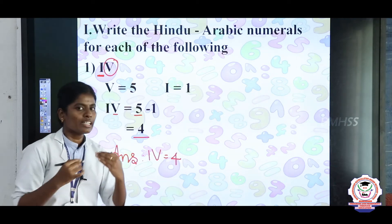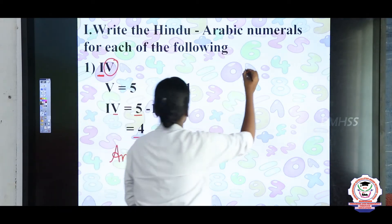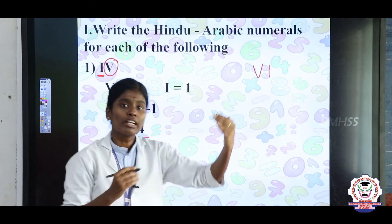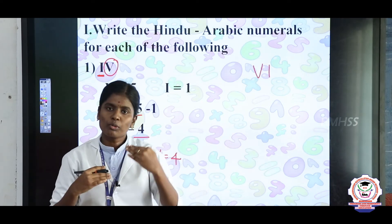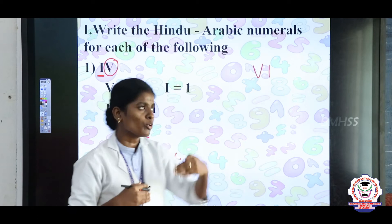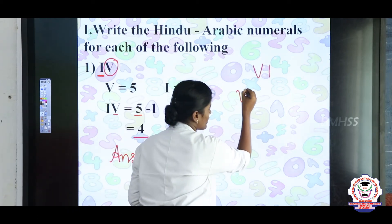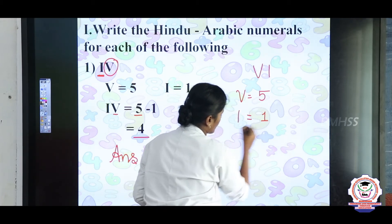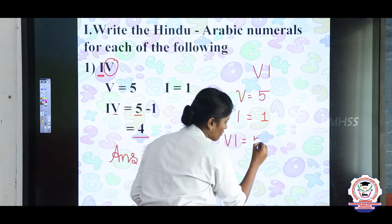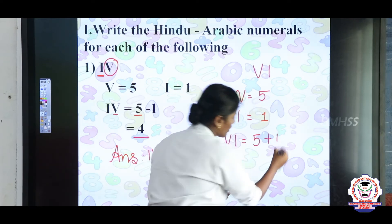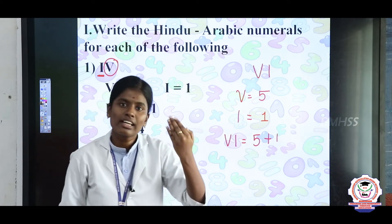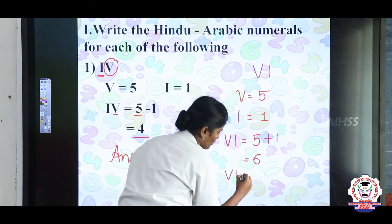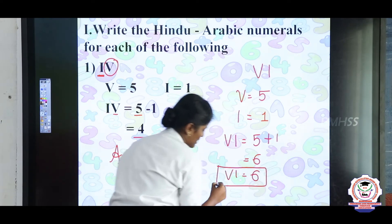Next example: VI. Here we have written the smaller numeral I on the right side of the greater numeral V. So it is addition: V plus I equals 5 plus 1. 5 in the mind, 1 on the finger — the answer is 6. VI equals 6.